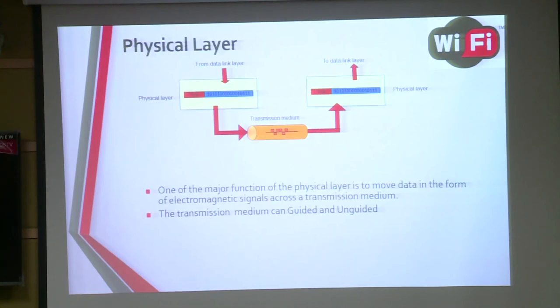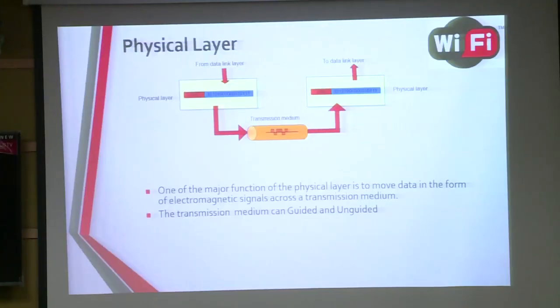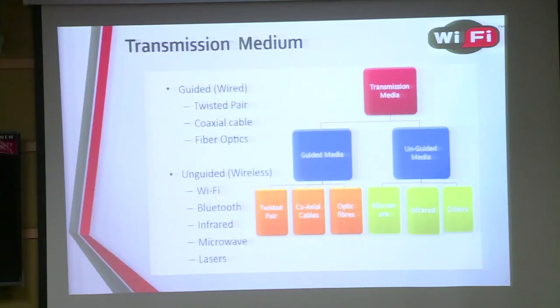Physical layer is responsible for the movement of bits, which are transferred in the form of zeros and ones. When your original data reaches the physical layer, it is in the form of a frame. On the physical layer, frames are transmitted over a certain medium — which can be guided or unguided. Medium can be classified as guided medium — twisted pair, coaxial cable, optical fiber — and unguided medium — microwave, infrared, and others such as radio waves and X-rays.